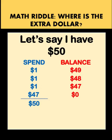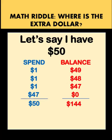But notice that in the balance column, the total would be $144, which is clearly way more than the $50 I started with. So this means that adding the spend column will always result in the amount I started with, but it is meaningless to add the balance column — this will not always total to $50.